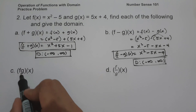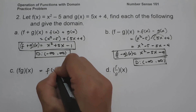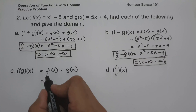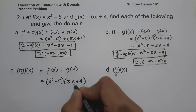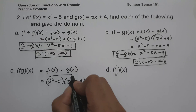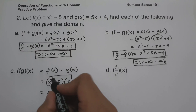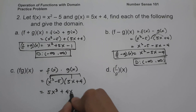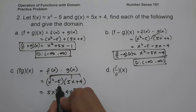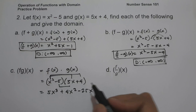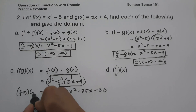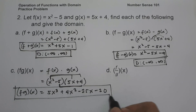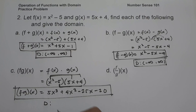On letter c, (f·g)(x) = f(x) · g(x) = (x² − 5)(5x + 4). Using FOIL: x² · 5x = 5x³, x² · 4 = 4x², (−5) · 5x = −25x, (−5) · 4 = −20. So (f·g)(x) = 5x³ + 4x² − 25x − 20. The domain is from negative infinity to positive infinity.